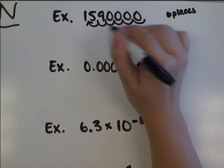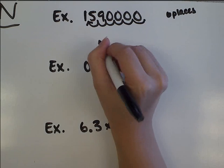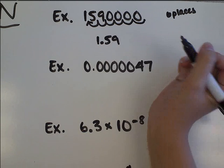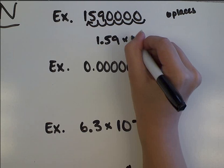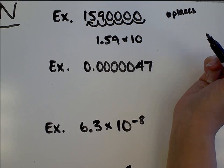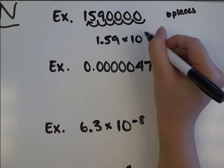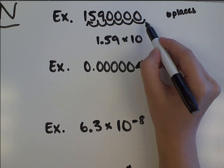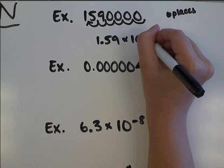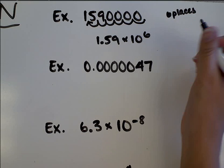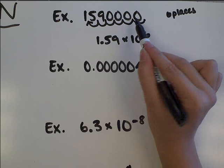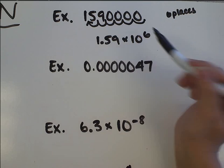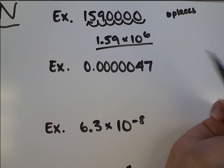So once I've moved that decimal point over, now my number is 1.59. Much better. Times 10 to the something power. That exponent, that power right there tells us the number of places we had to move the decimal point. We moved it 6 places, so we're going to put a 6 up here. This number is a big number, bigger than 1, so that means our exponent needs to be positive to represent a big number. This is our final answer.